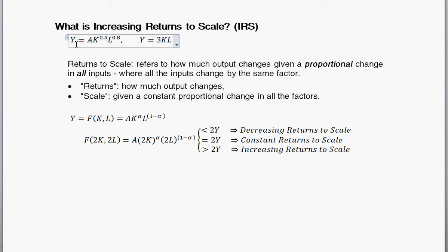Here's a couple examples of production functions. For example, here's Y, the level of output, is equal to these kind of inputs. A for technology, K for capital, L for labor. Here's another production function that has increasing returns to scale. The level of output is equal to 3 times the amount of capital times the amount of labor.